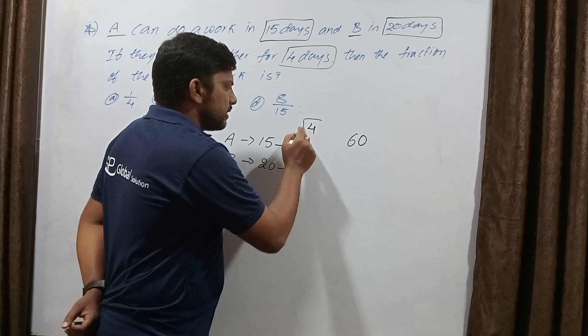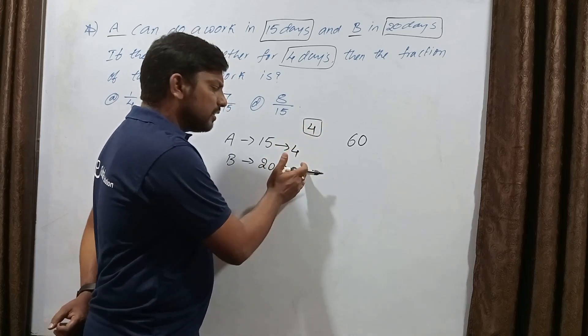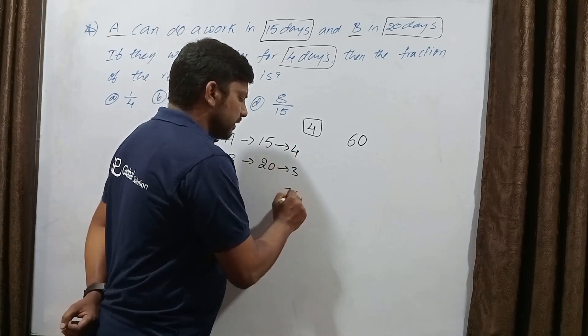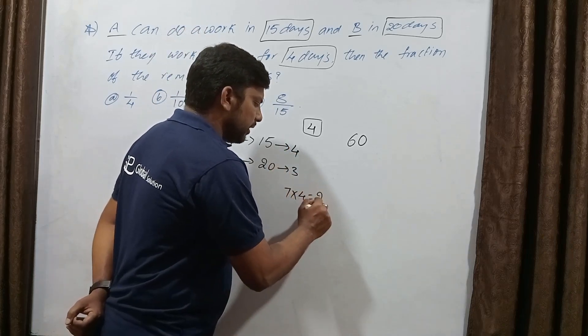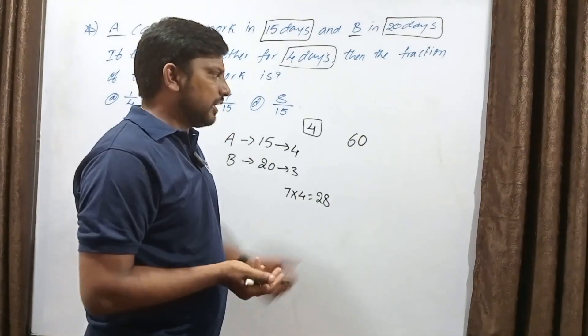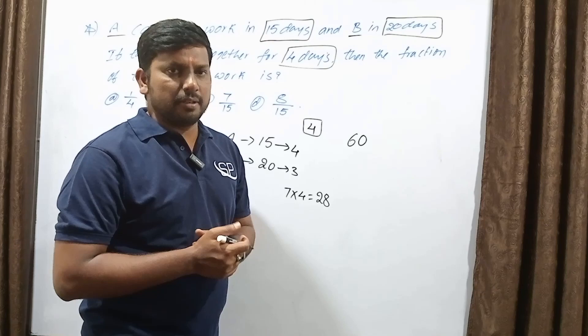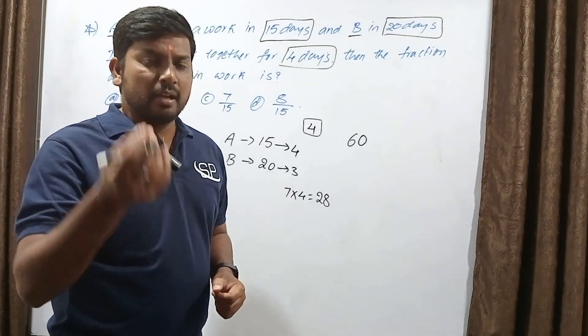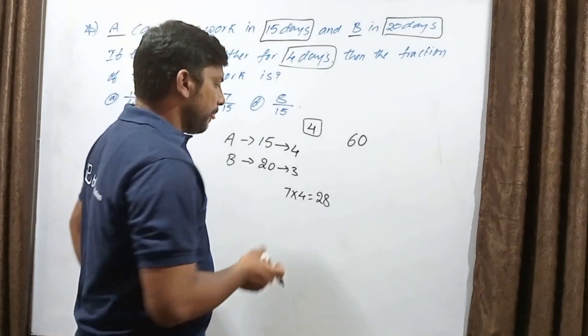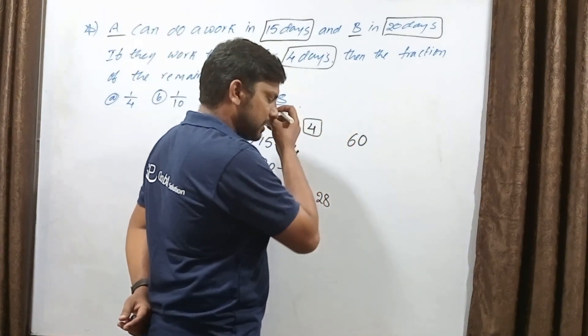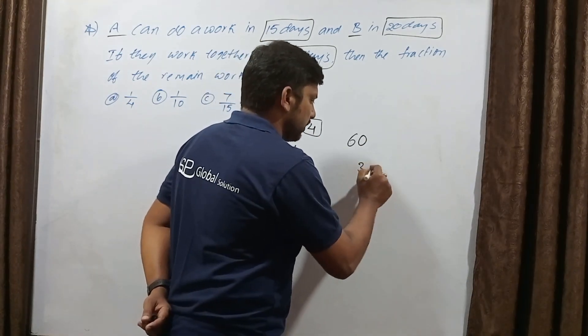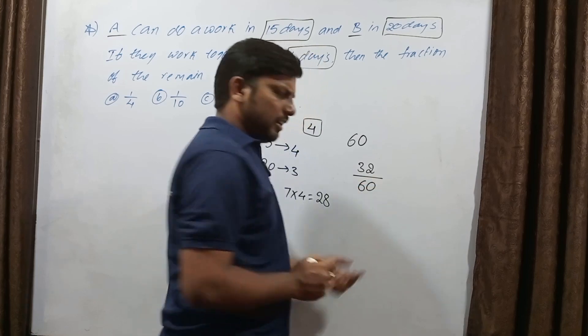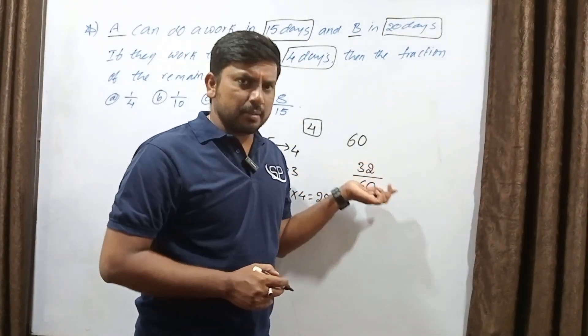They work together for 4 days, so we multiply by 4. 4 plus 3 is 7, so 7 into 4 means 28 parts of the work completed. We need to find the remaining work.